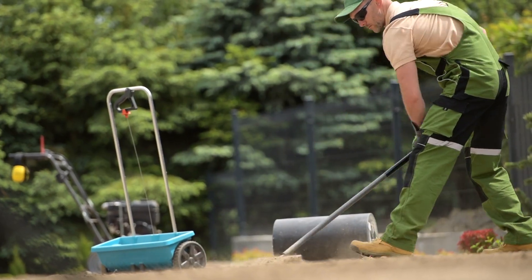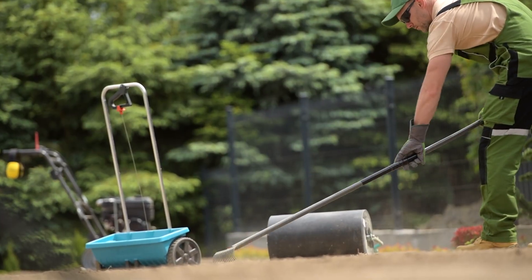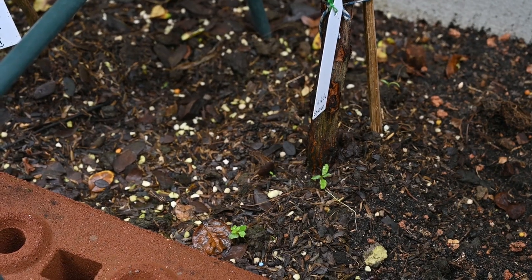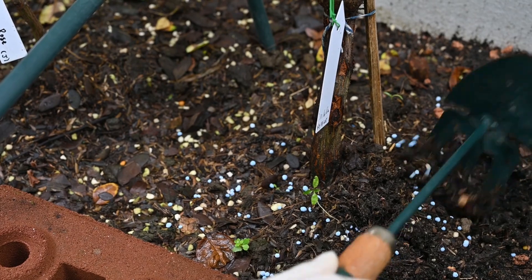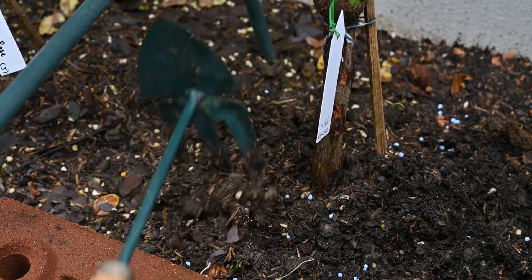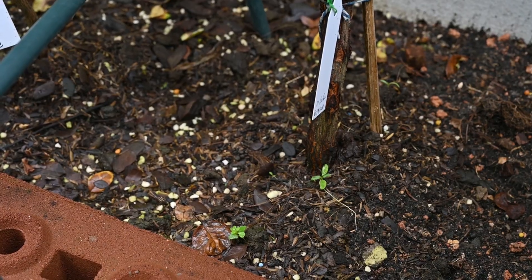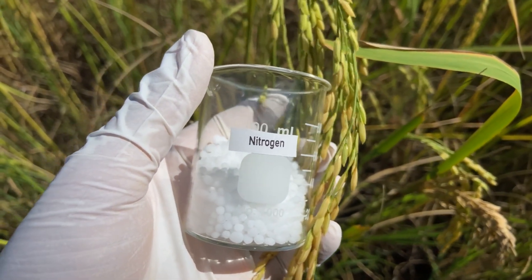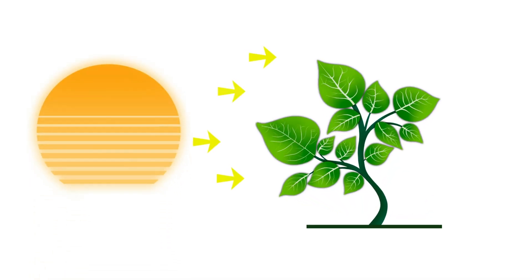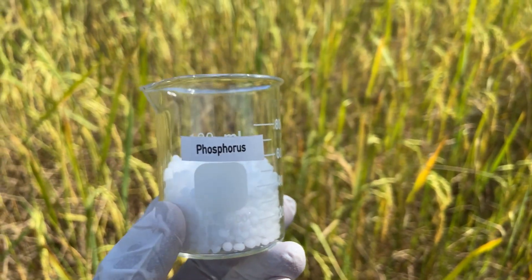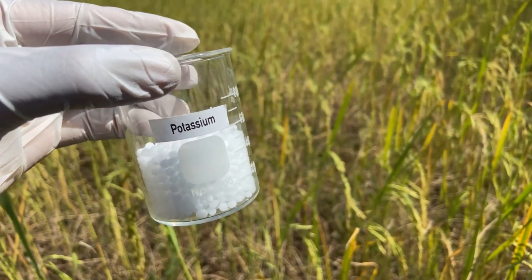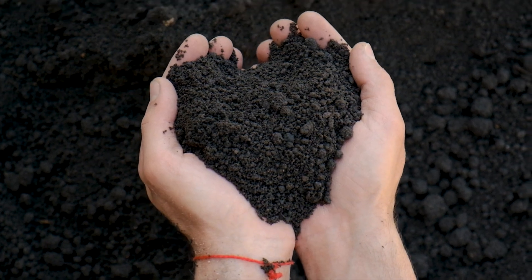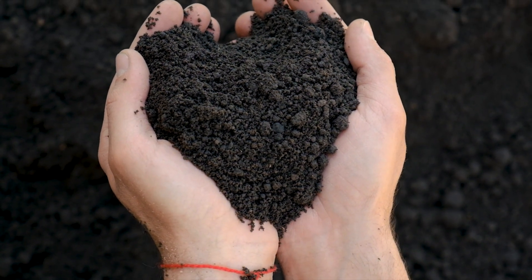In addition to testing your soil's pH, NPK testing is an essential aspect of soil analysis that measures the levels of three critical macronutrients: nitrogen (N), phosphorus (P), and potassium (K). These nutrients play vital roles in plant growth and development. Nitrogen is crucial for leafy growth and is a key component of chlorophyll, which plants use in photosynthesis. Phosphorus is important for root development, flower and fruit production, and overall plant energy transfer. Potassium helps with water regulation, disease resistance, and overall plant vigor. Ensuring balanced levels of these nutrients is crucial for maintaining a healthy and productive garden.